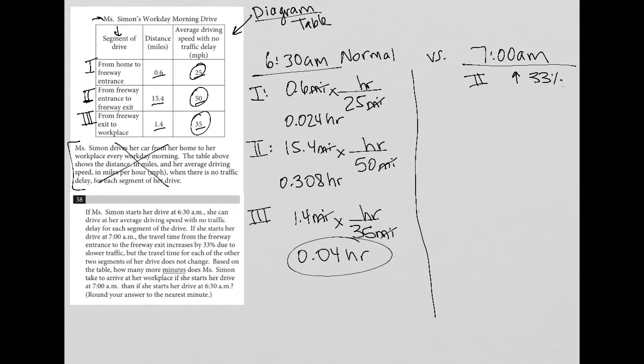That's 0.04 hours plus 0.308 hours plus 0.024 hours. All together, her entire trip at 6:30 AM is 0.372 hours.